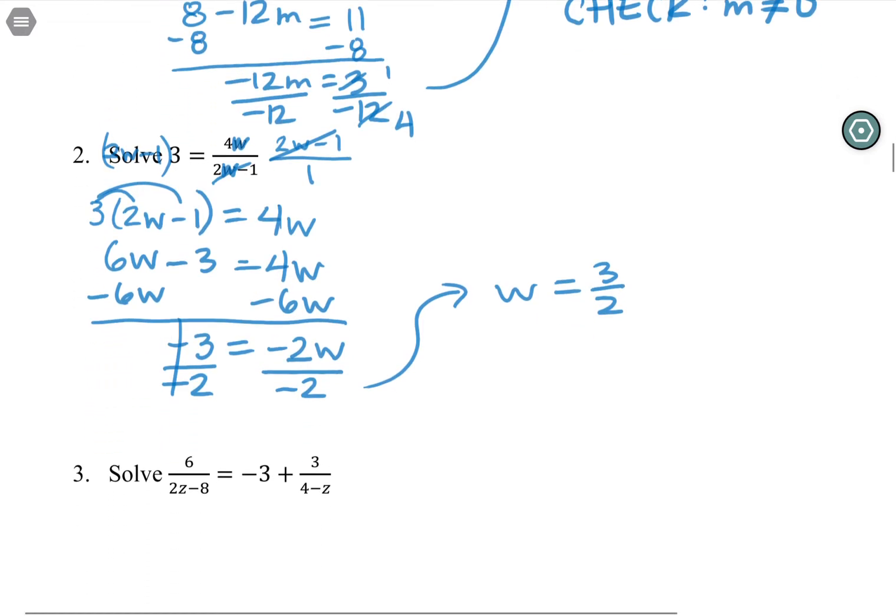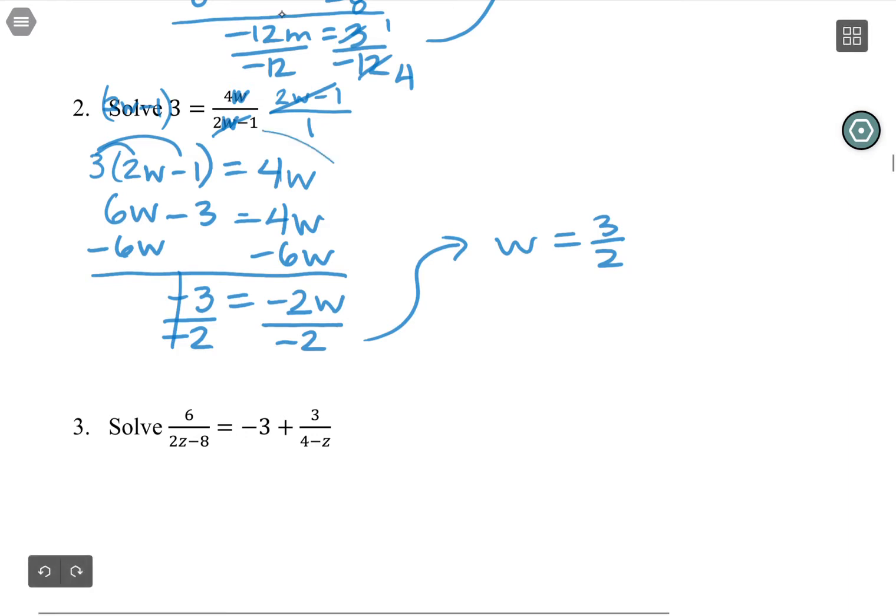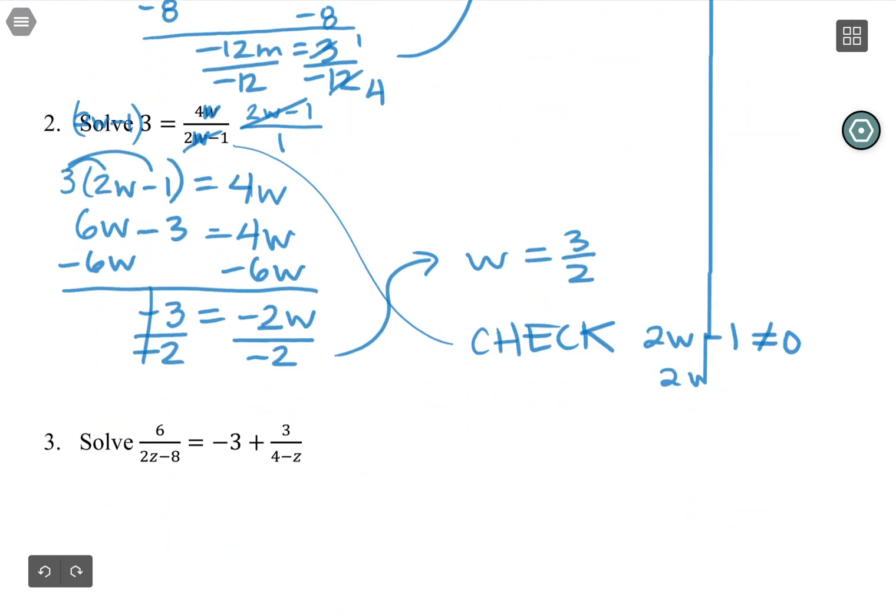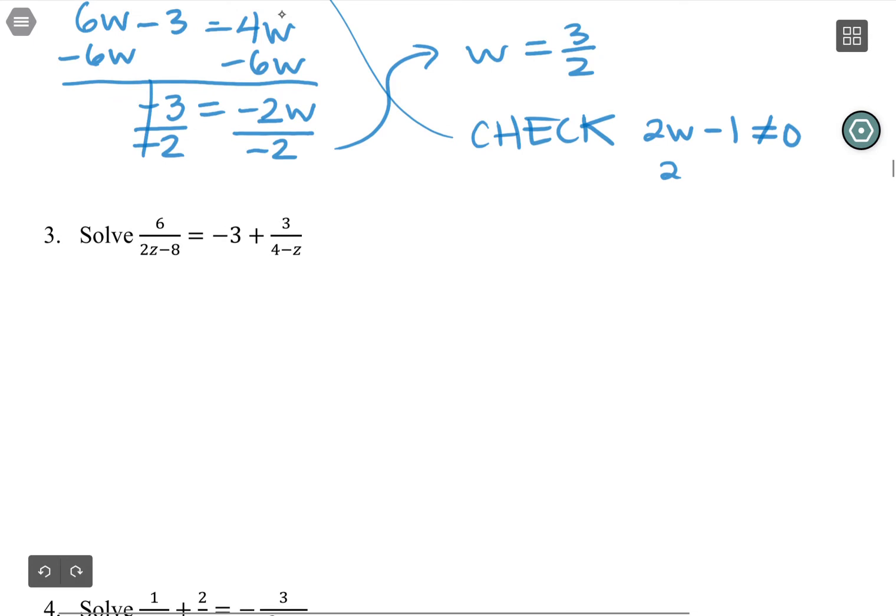For number two, I can do the same thing at the end. What I want here is to make sure, so for my check, I want to make sure that two w minus one is not equal to zero. That would be bad. You can't have zero in the bottom of the fraction, which means two w can't equal one. So the not equals, you can solve just like an equal to, it doesn't have a direction. So you can add one to both sides, and then you can divide both sides by two. And you see that w can't be one half. I got w equals three halves. So totally good solution. We keep it.